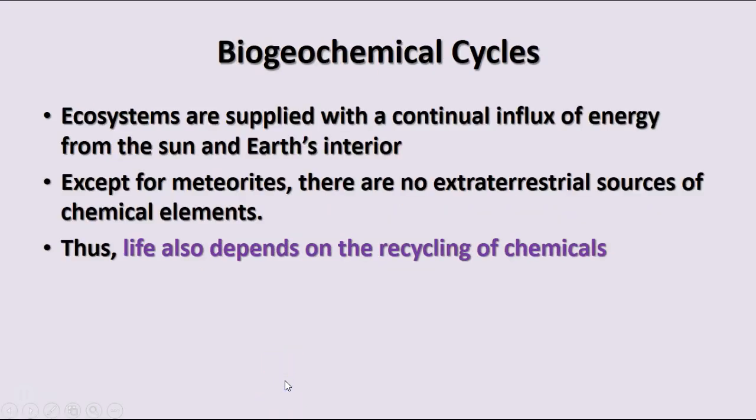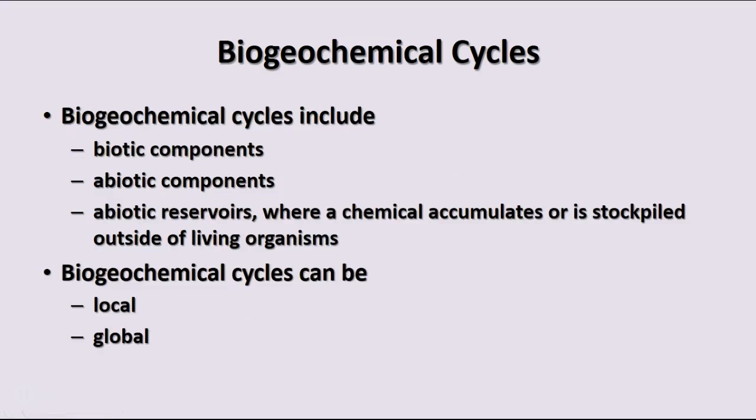When we talk about matter, we have to discuss how we get that matter into the ecosystem. We have a continual influx of energy from the sun and also heat from the Earth's interior, but we don't have any extraterrestrial sources of chemical elements. So life depends on recycling the chemicals that are already here. We'll talk about these cycles of various nutrients called biogeochemical cycles. There are biotic (living) components, abiotic (non-living) components, and reservoirs where the chemical is stockpiled outside living organisms.